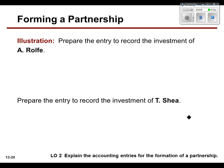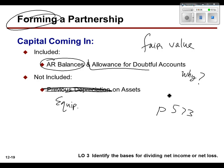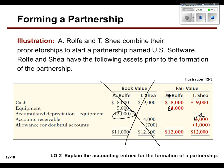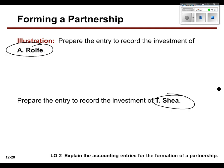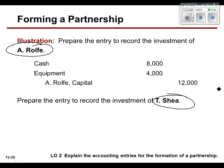Now let's take a look at what the journal entries would look like. We've got one for A. Rolf and one for T. Shea. They both have cash, one has AR, and one has equipment. A. Rolf brought $8,000 cash to the table and also $4,000 worth of equipment at fair value. The book value of the equipment is $5,000, but we list the fair value. We don't care about the $2,000 of accumulated depreciation. So his capital account is valued at $12,000 because of the two assets he brought.